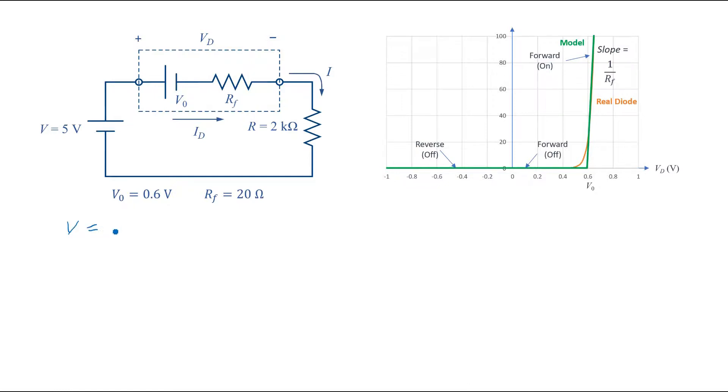The applied voltage equals to V0 plus the voltage across the resistor RF which is RF times ID and the voltage across the resistor R which is R times ID. Two resistors RF and R are in series and so we can add them together.